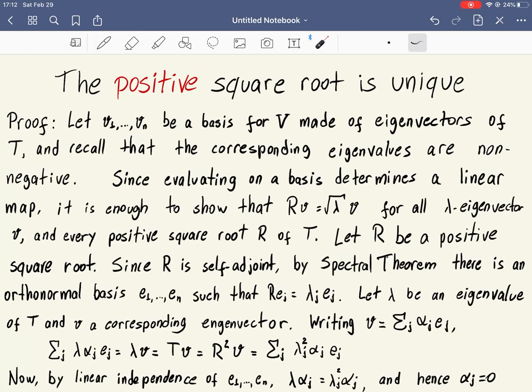We have already proved that there exists a positive square root for a positive operator. And now we're going to show that it's unique. How do we show that it's unique?